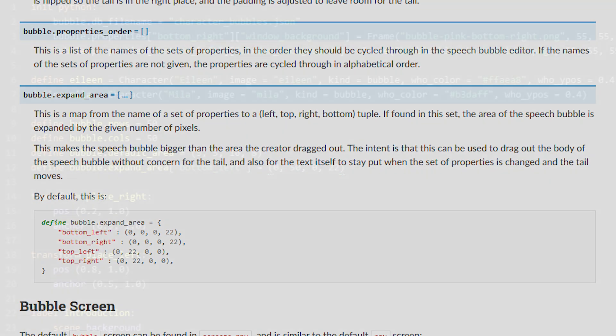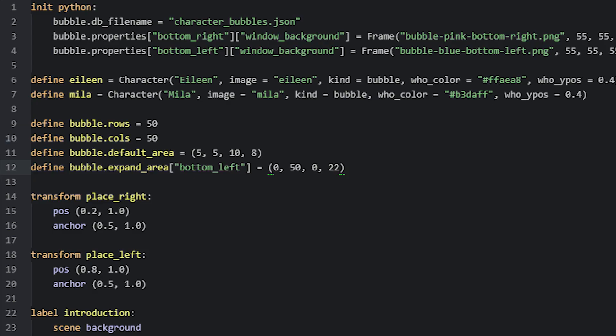For this example, I'll set the bottom left bubble type to have an extra 50 pixels at the top as well. For that, I'll grab the bottom_left key from the dictionary and then say it should be equal to a new tuple with the values 0, 50, 0 and 22. And the order of these values are specified in the documentation as well, in case you forget.